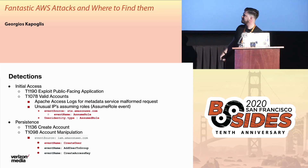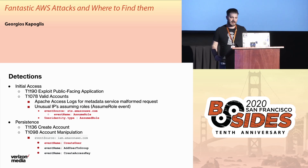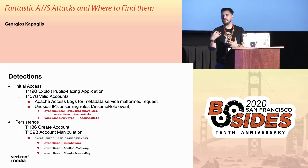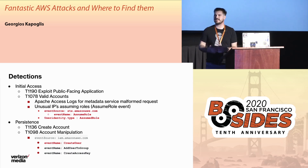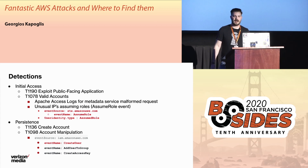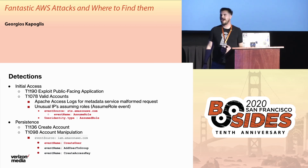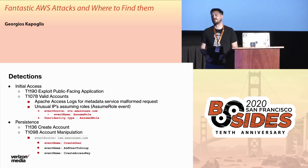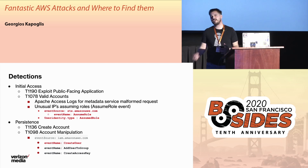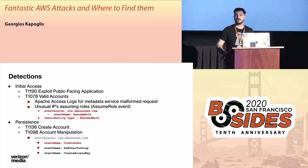On the persistence side, for create account and account manipulation, something with really good signal is the create user event, because it doesn't happen too often. Add user to group and create access key have a little bit more noise, but if you can hunt for these and look for unique IPs or abnormal user agents not seen in your environment, that's also a really good signal.